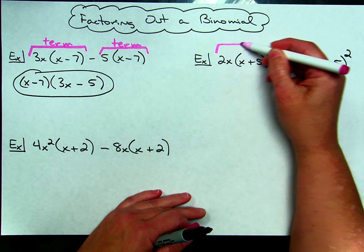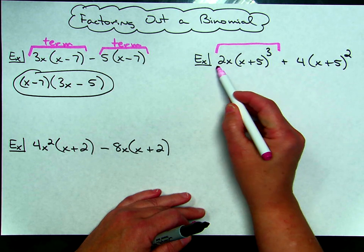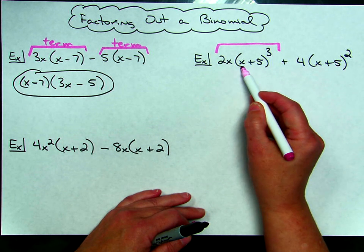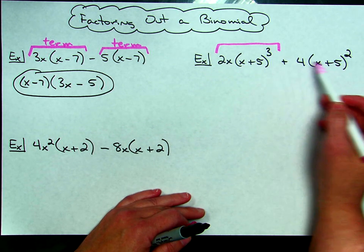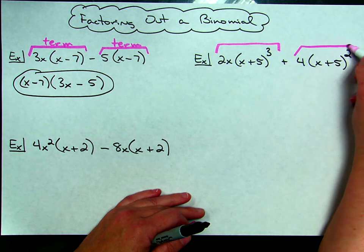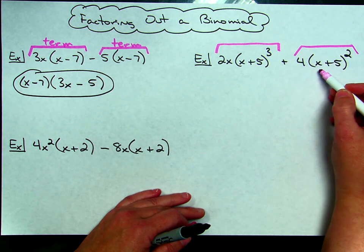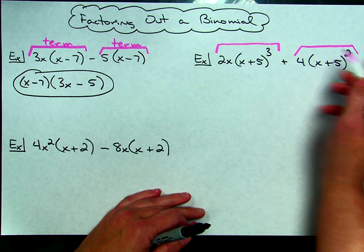So this term is 2x times the quantity x plus 5 raised to the third. I know that's all one term, because then there's my plus sign, and my second term then is 4 times the quantity x plus 5 squared. Okay, so I have two terms again.